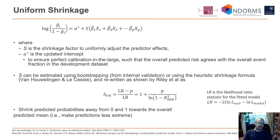So what do we mean by uniform shrinkage? Here is a logistic regression model. The beta_1*x_1 plus beta_2*x_2 is our linear predictor. We multiply that by a shrinkage factor S and then update the intercept so that we have perfect calibration in the large. Two ways of estimating S: via bootstrapping from internal validation, or using the heuristic shrinkage formula by van Houwelingen and le Cessie, which is (log likelihood ratio minus p) over the likelihood ratio, expressible as 1 plus p over log(1 minus the apparent R²).